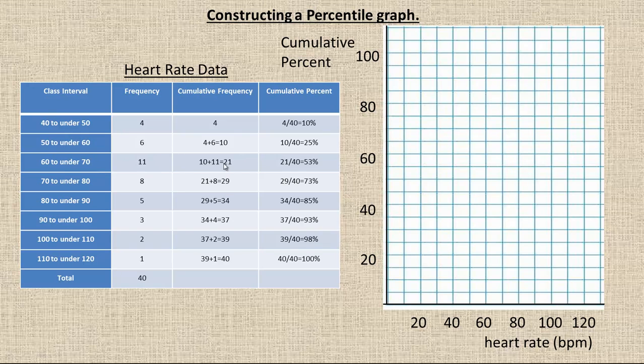And then, to go to the next category, we take the total 10 plus the 11 to get 21. 21 plus 8 would be 29. So, there's 29 people in total that have heart rates under 80. 29 plus 5 is 34 for the next one. Plus 3 more is 37. Plus 2 more is 39. And there's one person between 110 to under 120. And so, that gives you a total of 40 people.